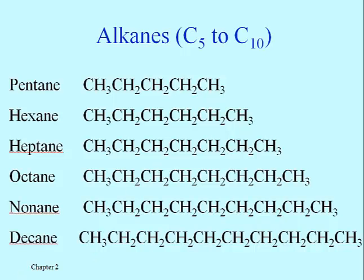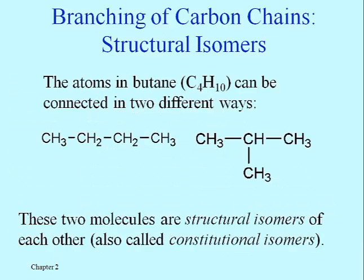The main reason there are so many alkanes is not simply because we can keep adding carbons in the chain, but because the carbons don't always have to be in sequence one after the other. That brings us to the next slide — the alkane family is so large because they oftentimes exist as groups of structural isomers.